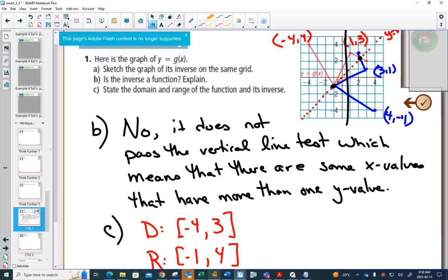For our blue graph, we have now a smallest x value in minus 1 and a biggest x value in 4. And for our blue graph, we have a smallest y value of negative 4 and a biggest y value of positive 3.